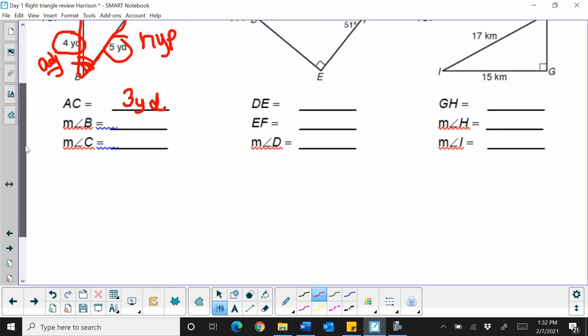I would use cosine. So cosine of B is equal to adjacent over the hypotenuse. So let's plug in what we know. We know the adjacent is 4, we know the hypotenuse is 5, and we need to find angle B.